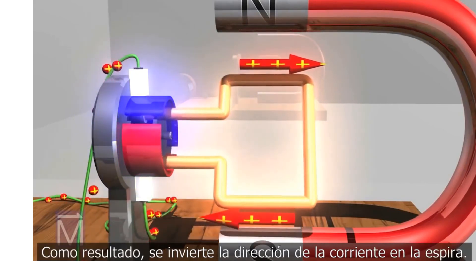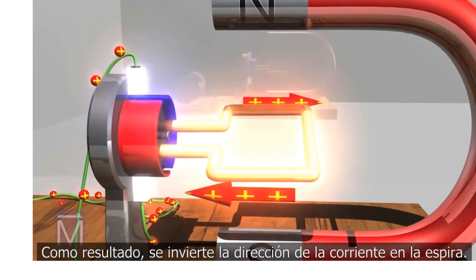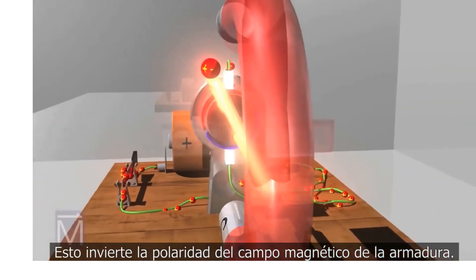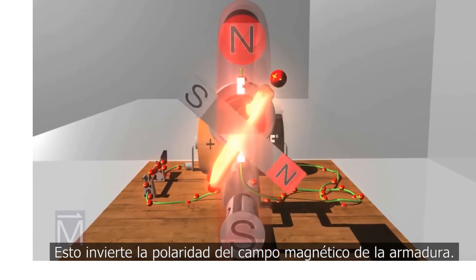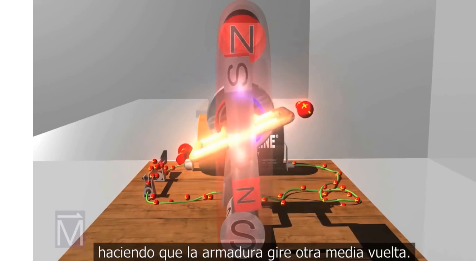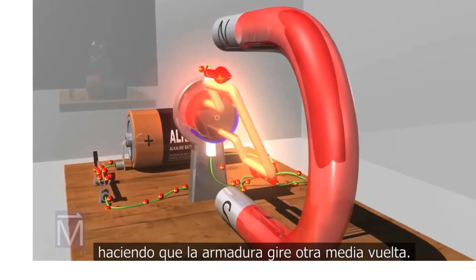As a result, current is sent through the coil in the opposite direction. This reverses the polarity of the electromagnet created by the powered armature. So once again, opposites attract, likes repel, and the armature turns another half rotation.